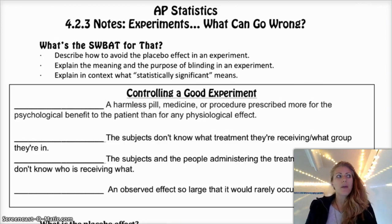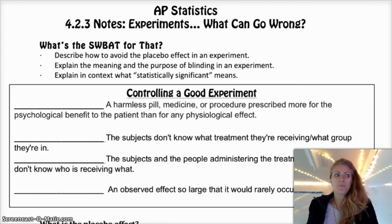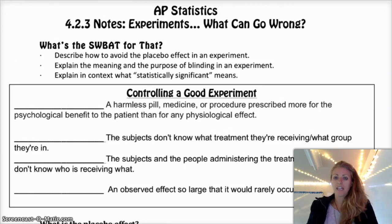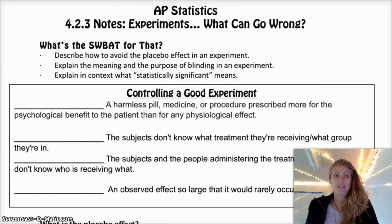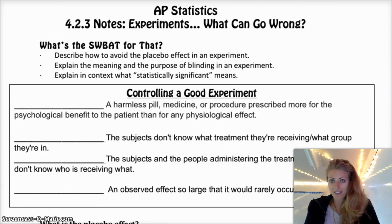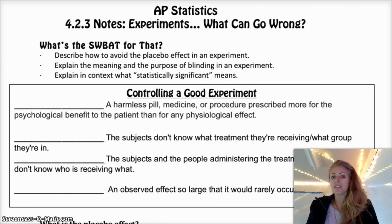Most of you have already heard of the placebo effect. Basically, the placebo effect is that the mind is so powerful that sometimes when people are taking medication they think is real medication, but is actually like a sugar pill or something, they actually see and feel the same effects at a pretty similar rate as somebody who has actually taken the drug. They're not taking anything, but their body reacts in a way that makes them think they got the real drug. This happens a ton, which is why in many experiments you need to have a placebo to control for the placebo effect.